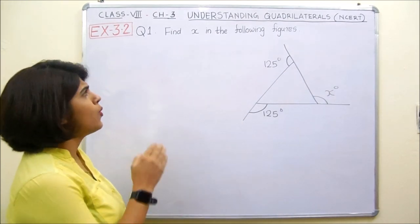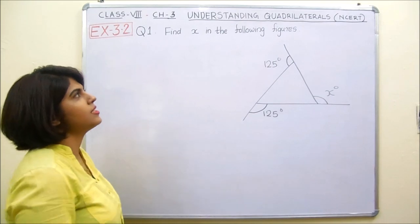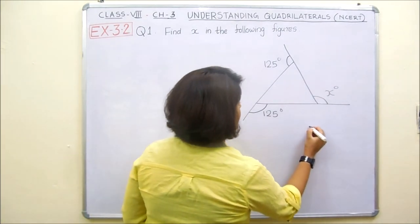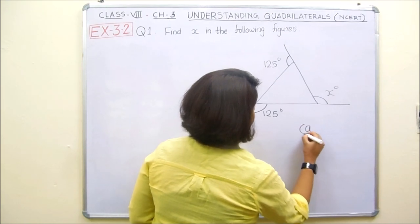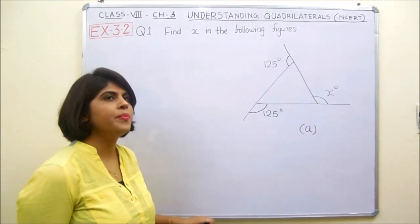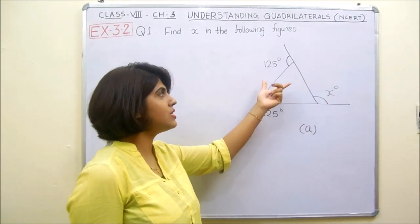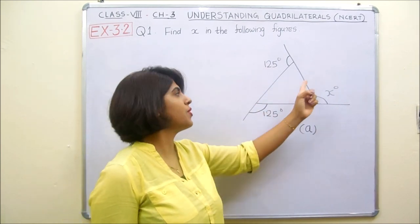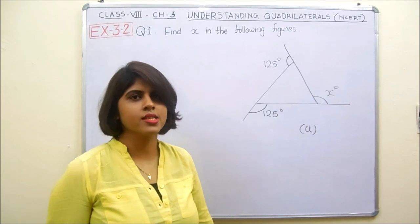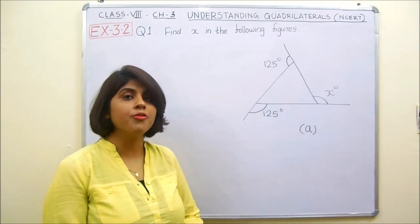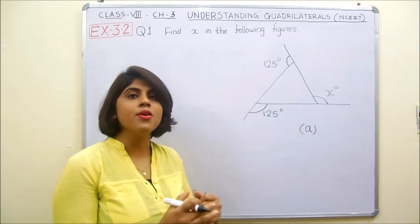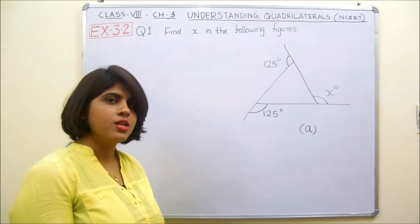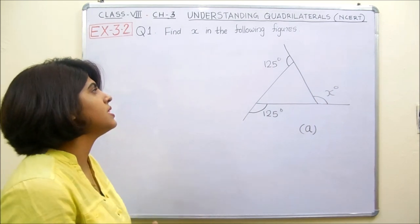First question: Find X in the following figures. This is part E. Here we are given a triangle. Two of its exterior angles are given, and we have to find the exterior angle X. By the exterior angle property of a polygon, the sum of exterior angles of any polygon is 360 degrees. So we can use that property here.